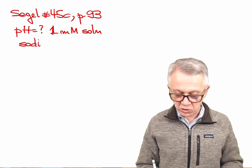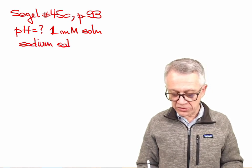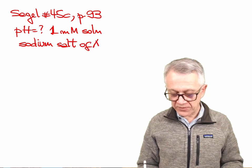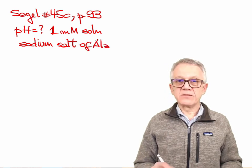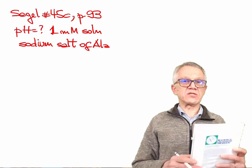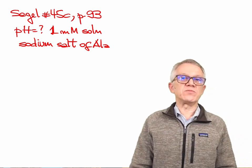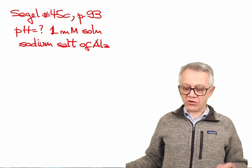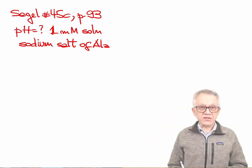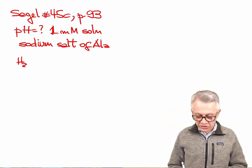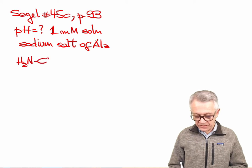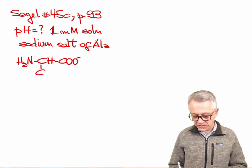Sodium salt of alanine. So obviously here is the easiest one because if it's a sodium salt then alanine has to be in the negative form. So we have the negative form of alanine that's going to be H2N-CH-COO- and CH3.